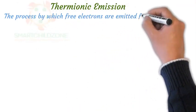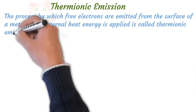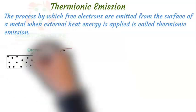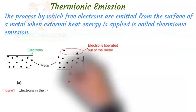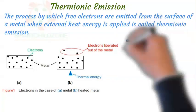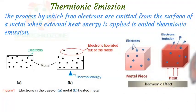The process by which free electrons are emitted from the surface of a metal when external heat energy is applied is called thermionic emission. When a metal is heated sufficiently, the thermal energy supplied to the free electrons causes the emission of electrons from the metal surface. This occurs because the thermal energy given to the carriers overcomes the work function of the material. At average room temperature, the energy possessed by free electrons in a metal is insufficient to initiate thermionic emission.